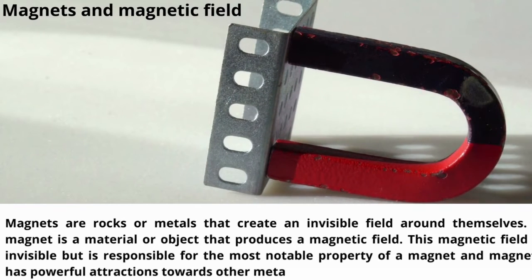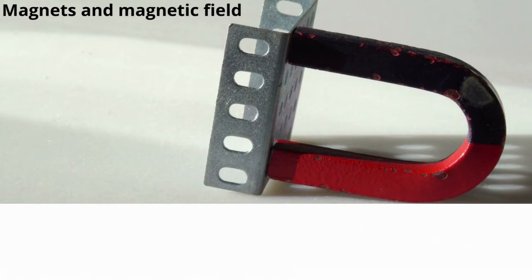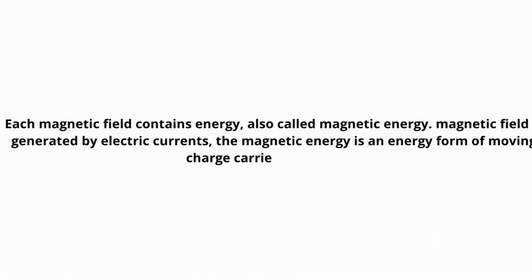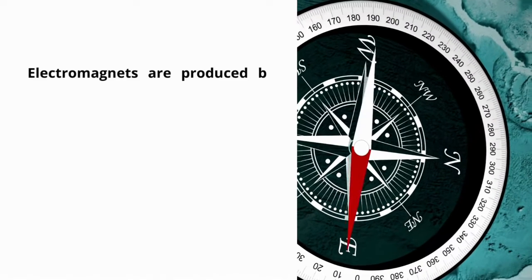A magnet is a material or object that produces a magnetic field. This magnetic field is invisible but is responsible for the most notable property of a magnet and it has powerful attractions towards other metals.